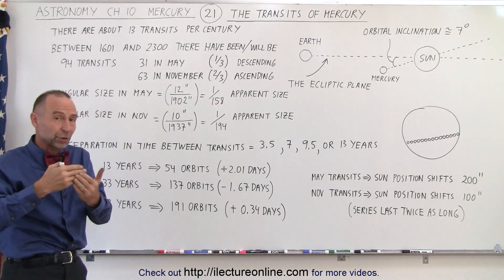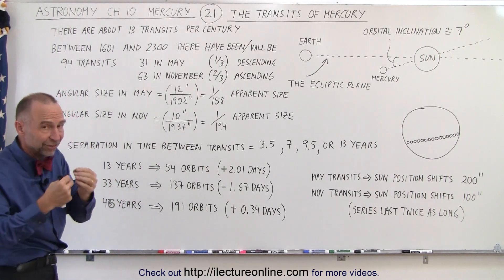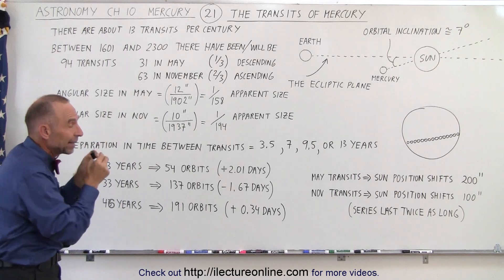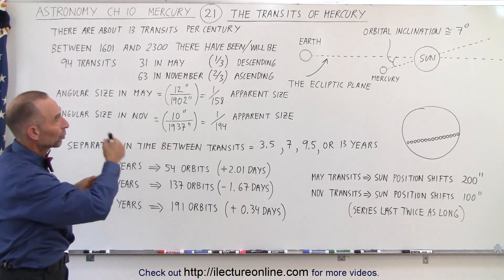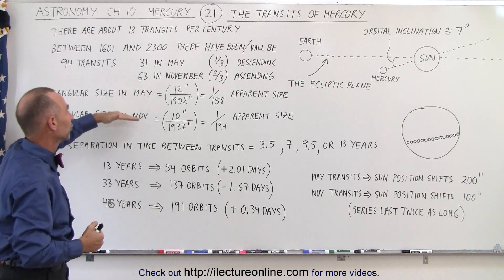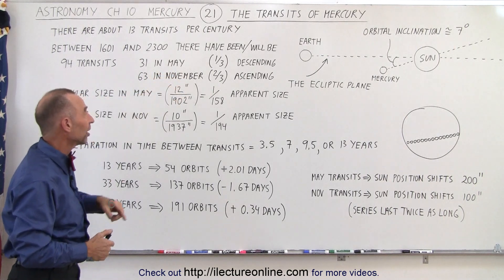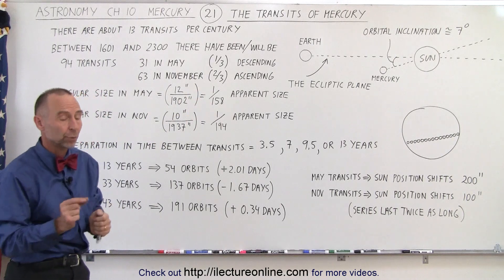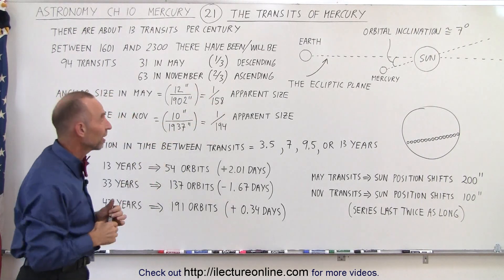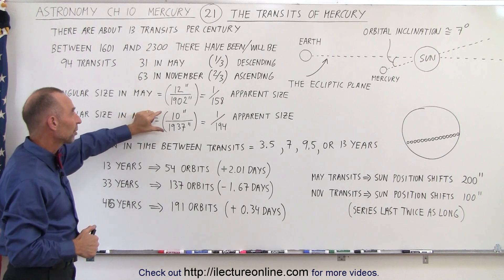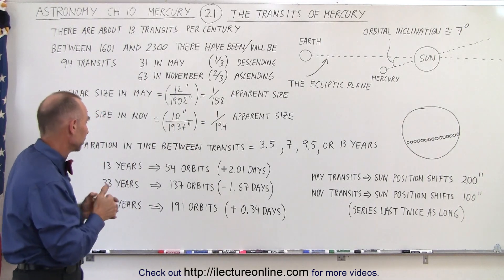Because Mercury is in a very elliptical orbit, it is sometimes closer to and sometimes farther from the sun, and the same applies to Earth to a lesser extent. This means the angular size of Mercury relative to the angular size of the sun differs depending on whether the transit occurs in May or November. In May, the ratio is 1 to 158 — meaning Mercury's disk diameter appears 1/158 the size of the sun. In November, the ratio is smaller, with the sun appearing 194 times the diameter of Mercury.